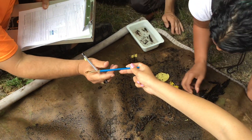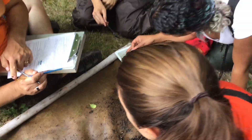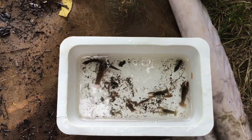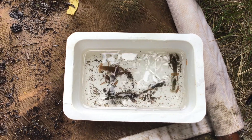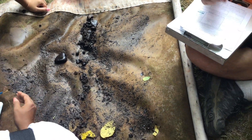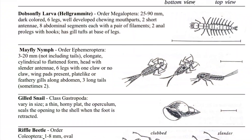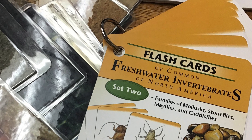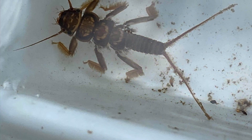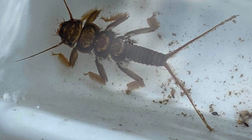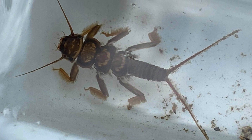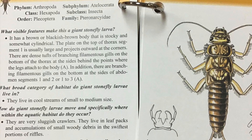Next, we take the nets to shore and sort the bugs by what species they are. We use reference material to identify what species an unknown macroinvertebrate is. Do you remember the name of this macro? That's right — it's a stonefly!